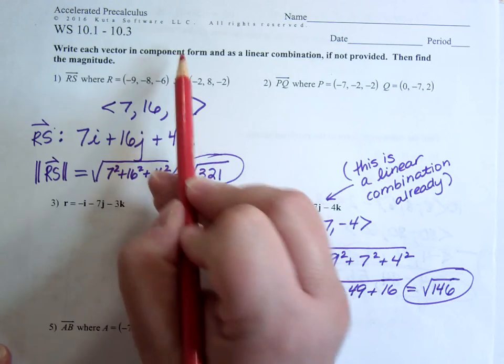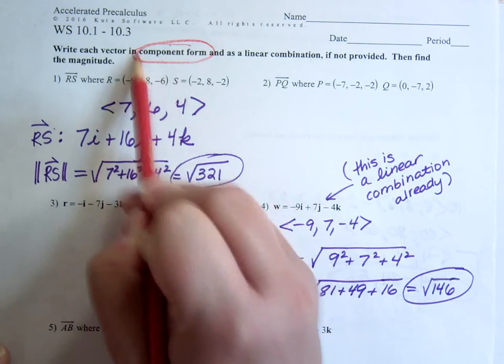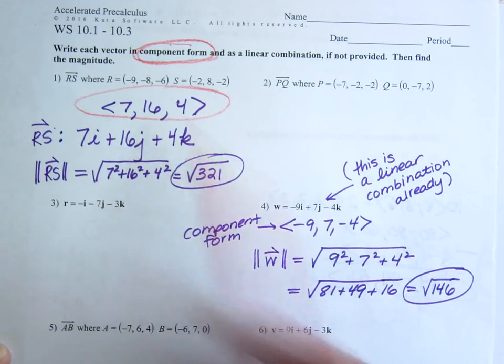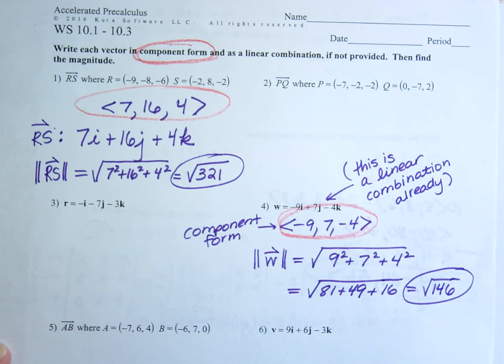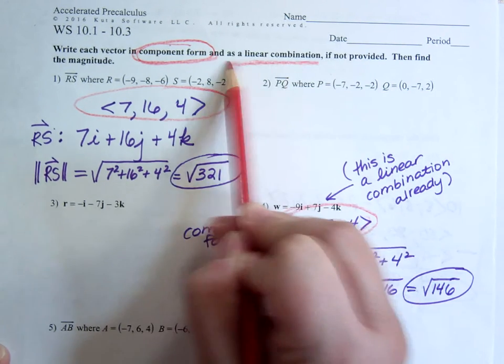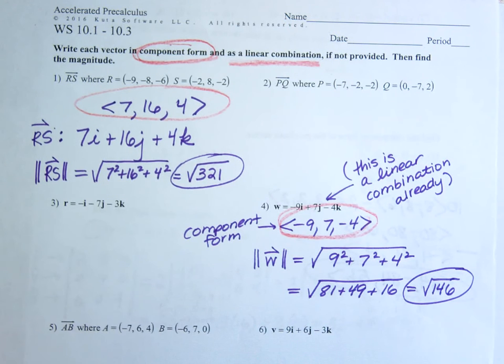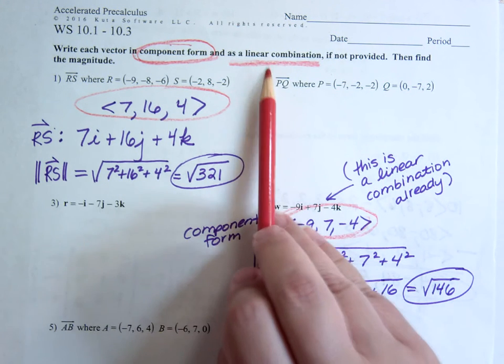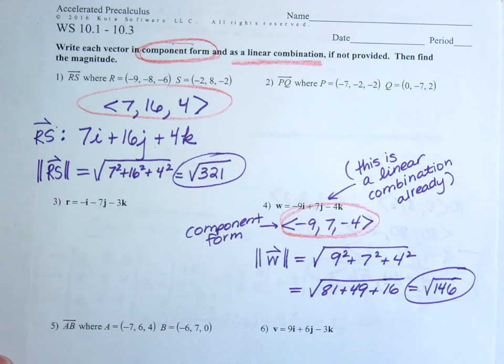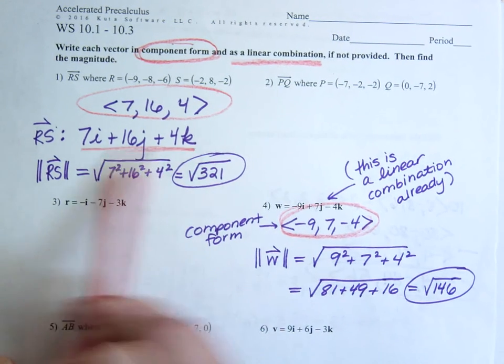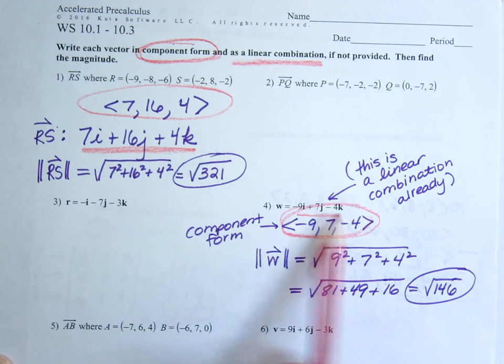Numbers 1 through 8 all ask you to write the vector in component form, so that's like this, or here it is like this. And as a linear combination. The full way of saying that is as a linear combination of unit vectors i, j, and k. So that just really means in i, j, k form. This is what that's talking about. This is a linear combination already, so we didn't have to do it.